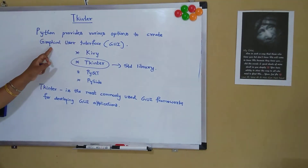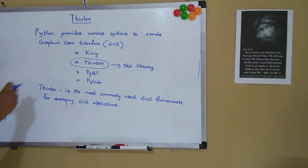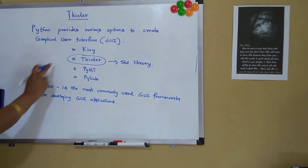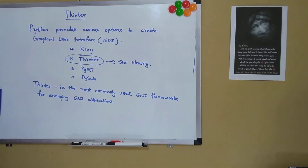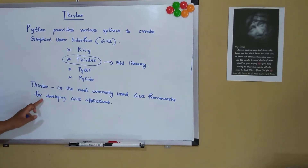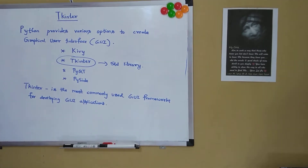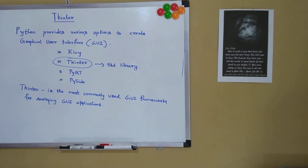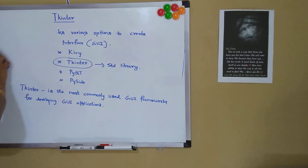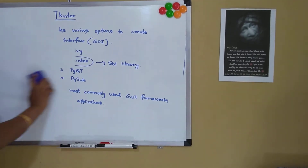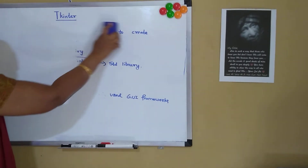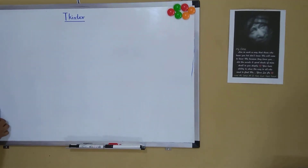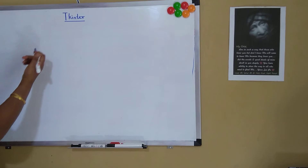Python provides various options to create GUI applications. The four important frameworks are Kiwi, tkinter, PyQt, and PySide. Tkinter is the most commonly used GUI framework for developing GUI applications. It is a standard library available in Python. With the help of tkinter, we can easily develop graphical user interfaces for desktop applications.